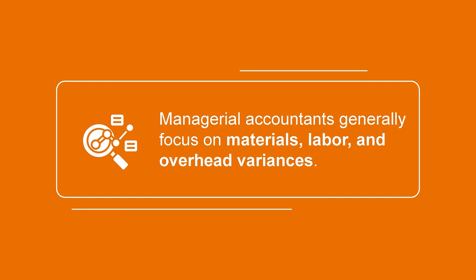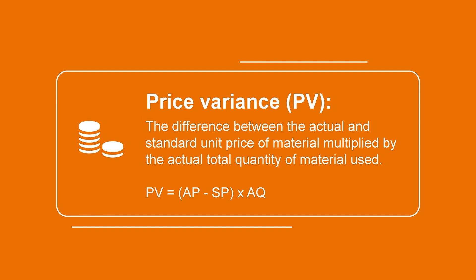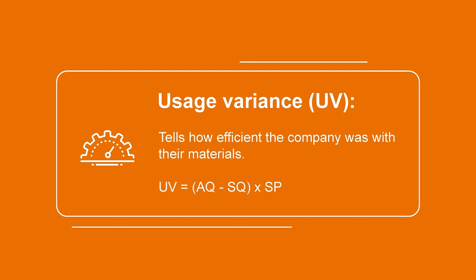While there are many categories of variances that can be analyzed, managerial accountants generally focus a significant amount of their variance analysis on materials, labor, and overhead variances. For each of these categories of costs, companies will first calculate the total budget variance, which is the difference between the actual cost and its planned cost. Actual cost is calculated by taking the actual price times the actual quantity, and planned cost is calculated by taking the standard or budgeted price (represented as SP) times the standard quantity. This variance can be further broken down into both price and usage variances in order to investigate where the issue is coming from. Price variance is the difference between the actual and standard unit price of material, multiplied by the actual total quantity of material used. Usage variance tells us how efficient the company was with their materials by taking the difference between the actual and standard quantity of materials and multiplying it by the standard price.